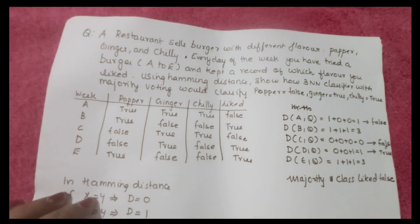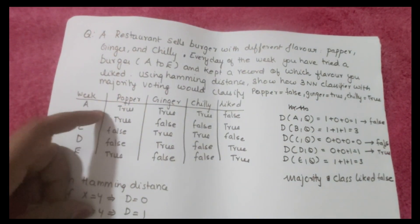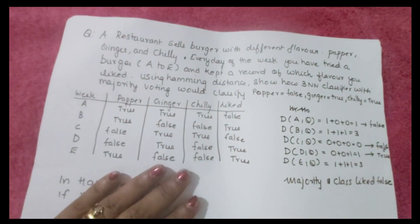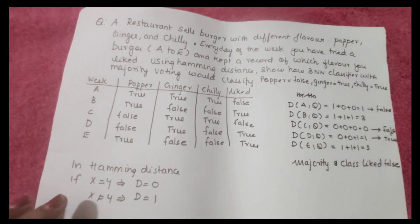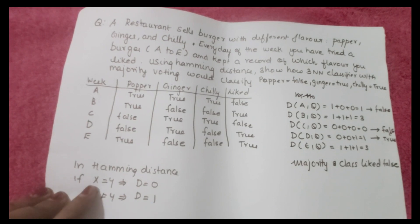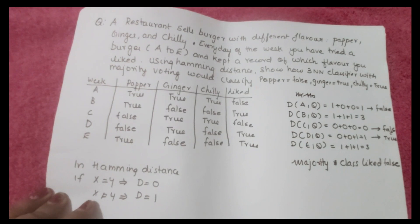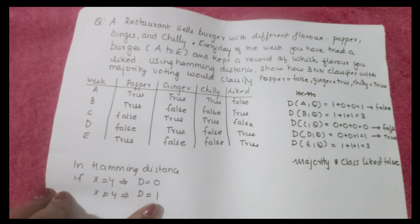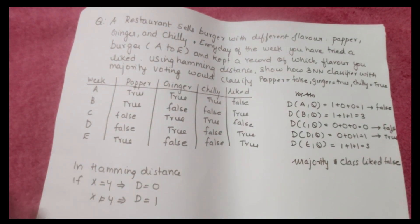The data for weeks A through E is given with attributes Pepper, Ginger, Chili, and Liked. According to Hamming distance: if x = y, distance = 0; if x ≠ y, distance = 1. We have the observed attribute (our query) and the actual attribute (each training record), and we compare them.